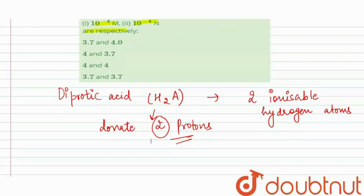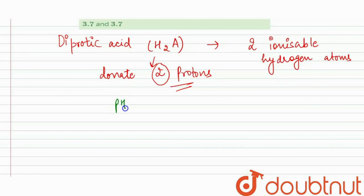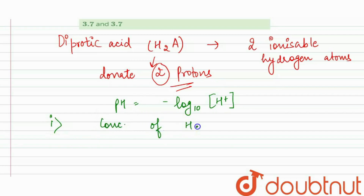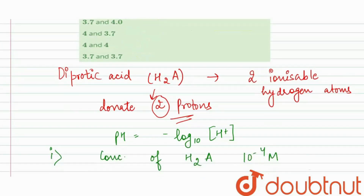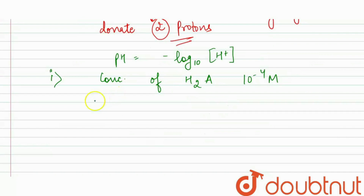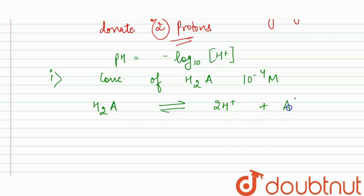We know that pH = −log₁₀[H⁺]. In the first part, the concentration of the diprotic acid is 10⁻⁴ molar. When H₂A undergoes dissociation, it produces two moles of hydrogen ions. So the concentration of H⁺ ions will be 2 × 10⁻⁴.